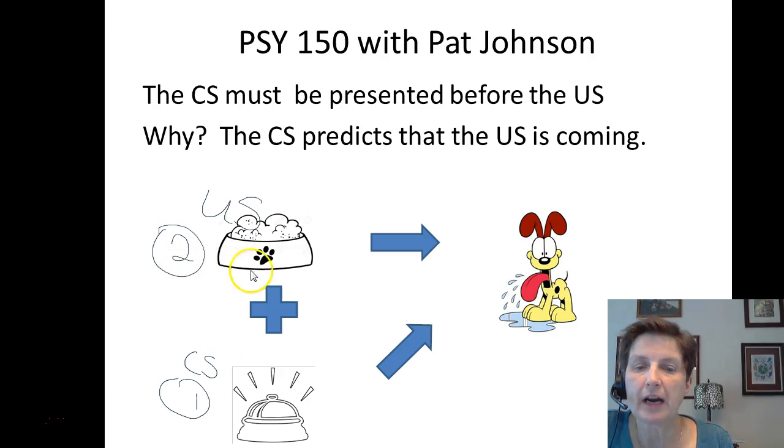Imagine if it was the other way around. Let's suppose we gave the dog the food first and then we rang the bell. Well that bell would be meaningless in that case because the dog's already chowing down on the food. It can't work that way. The CS has to precede the US because the CS predicts that the US is coming.